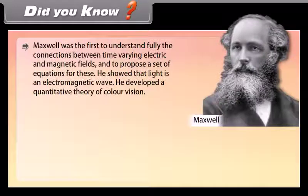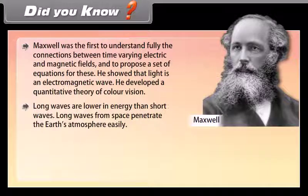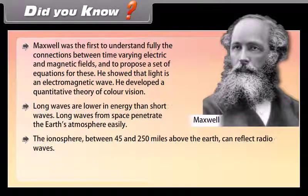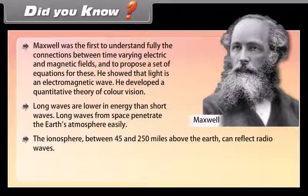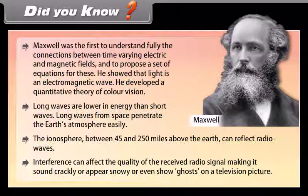Did you know: Maxwell was the first to understand fully the connections between time-varying electric and magnetic fields and to propose a set of equations for these. He showed that light is an electromagnetic wave. He developed a quantitative theory of color vision. Long waves are lower in energy than short waves. Long waves from space penetrate the earth's atmosphere easily. The ionosphere, between 45 and 250 miles above the earth, can reflect radio waves. Interference can affect the quality of the received radio signal making it sound crackly or appear snowy or even show ghosts on a television picture.